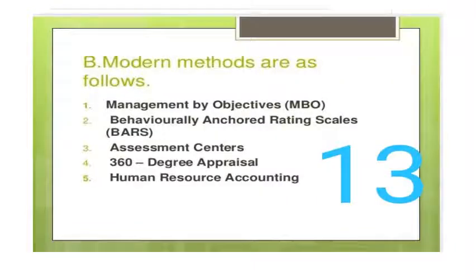The second main classification is modern methods, which are as follows: 1st is management by objectives, 2nd is behaviorally anchored rating scales (BARS), 3rd is assessment centers, 4th is 360-degree appraisal, and 5th is human resource accounting.